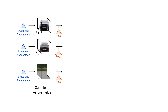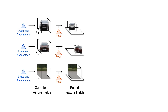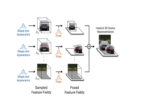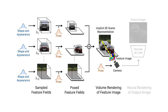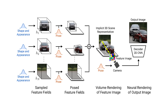Next, for each feature field we sample a pose from a predefined distribution. We can then apply the resulting transformation to each feature field to obtain posed feature fields which all live in the same scene space. We then combine all individual feature fields using the composition operator to obtain one single scene representation. In order to render the scene we first need to sample the camera pose from a predefined distribution. We then perform volume rendering for the sampled camera and obtain a feature image. This low-resolution feature image is then passed to a 2D neural renderer which upsamples the image and outputs the final RGB rendering.